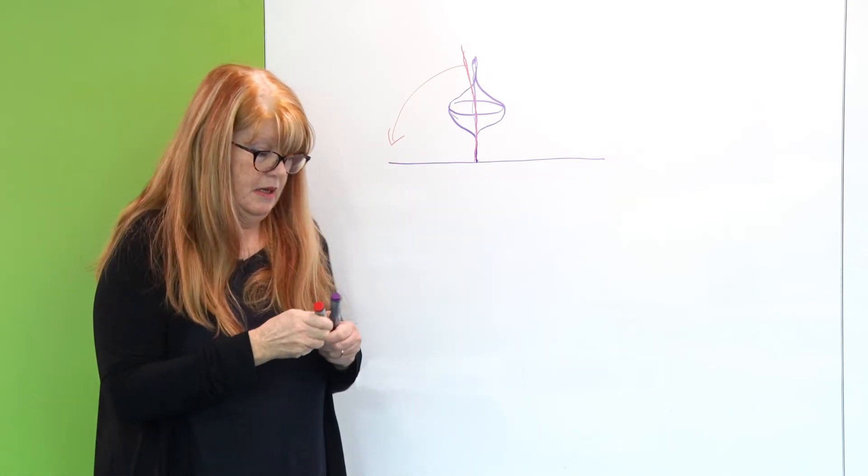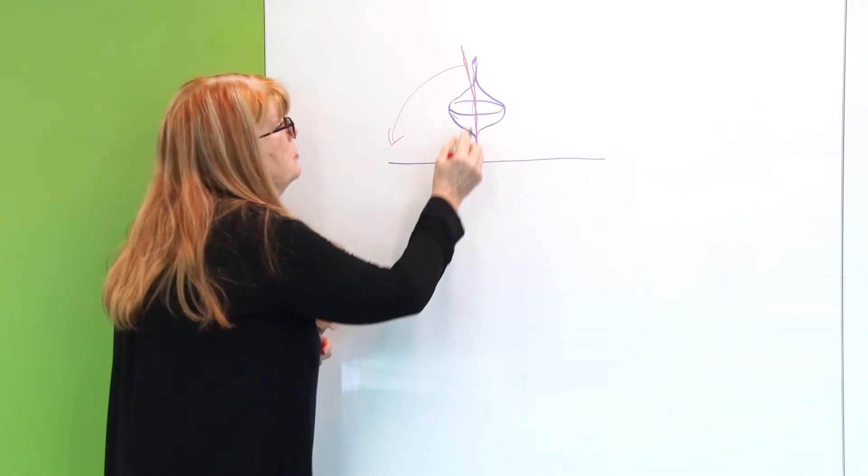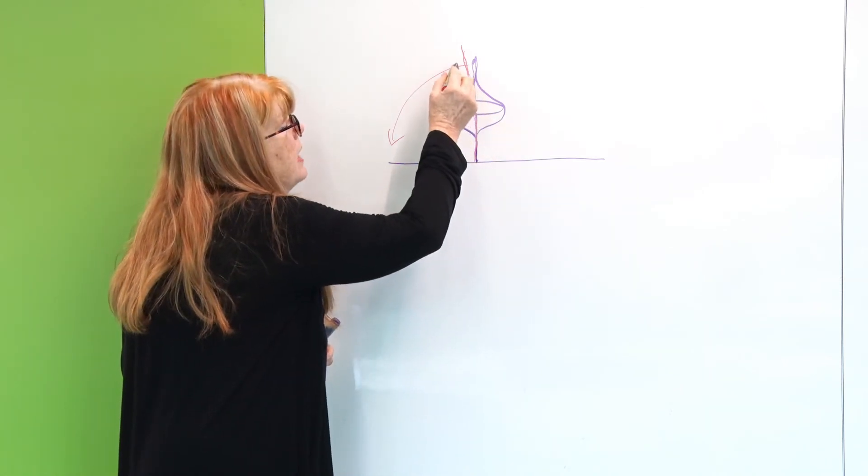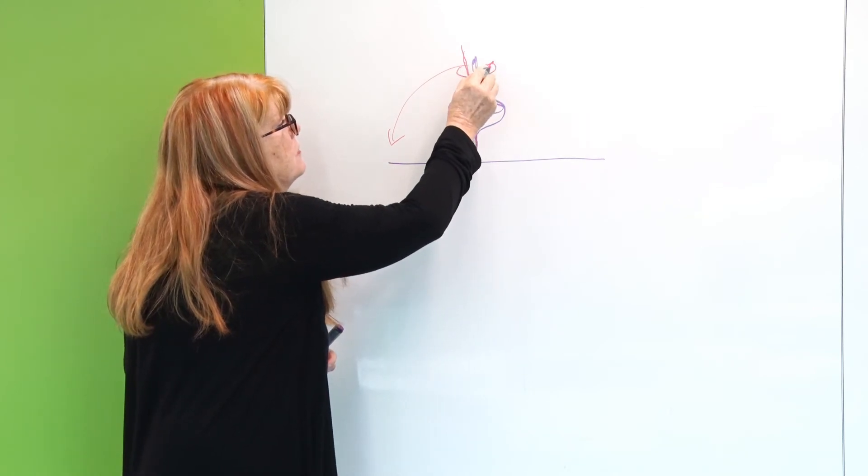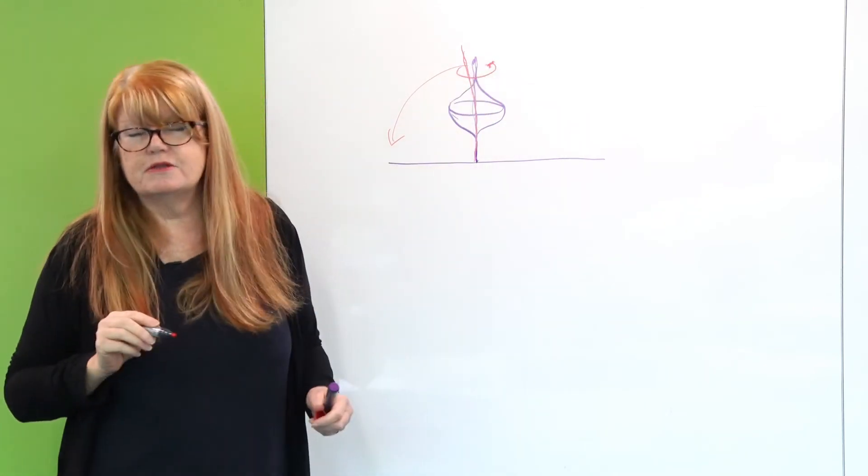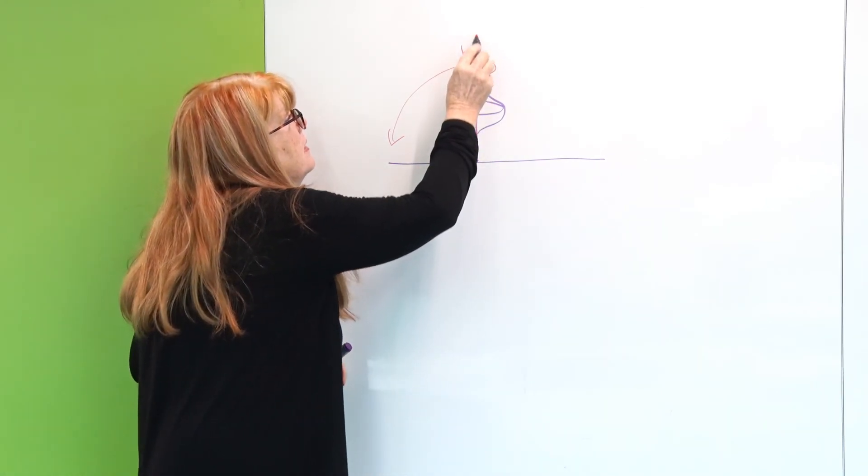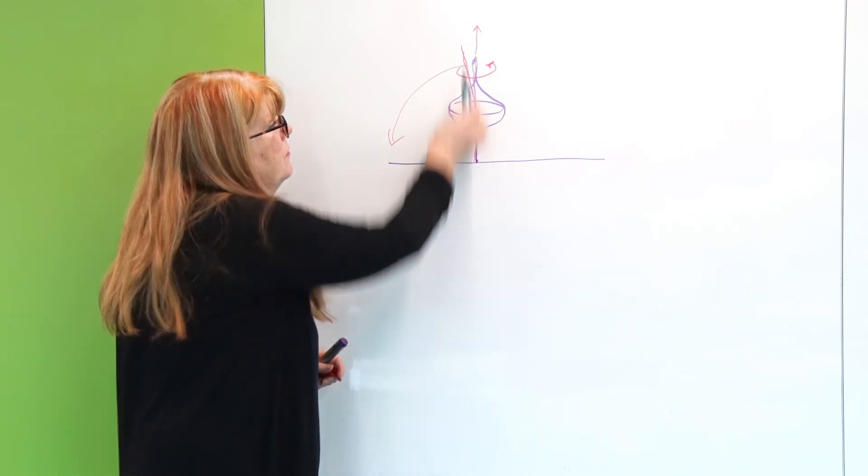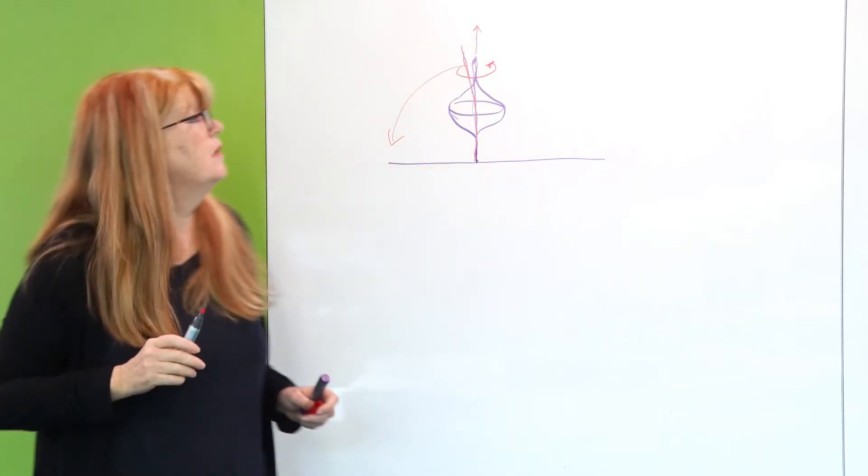There's something called angular momentum, which I won't really talk about, but the angular momentum is for those who've done a bit of physics at school and vectors, the angular momentum is a vector in the direction of the vertical that it's spinning around.